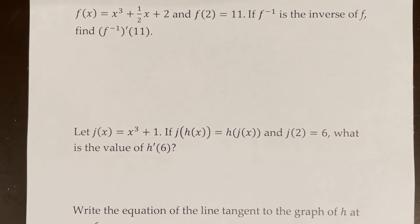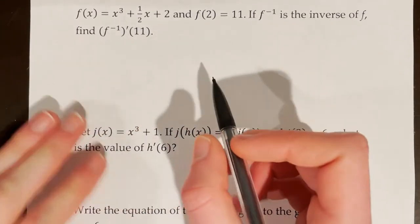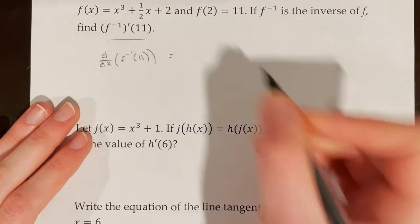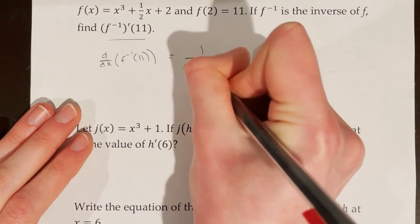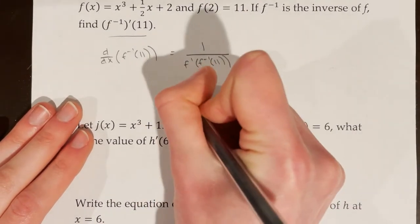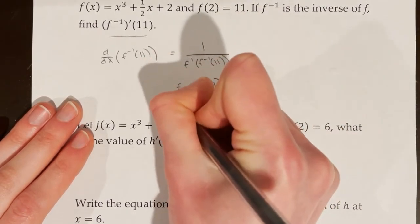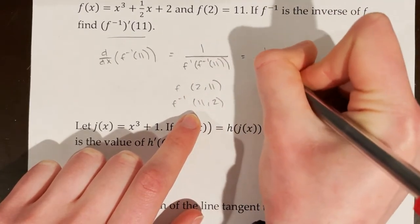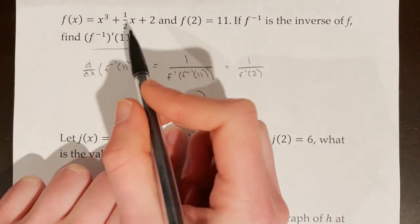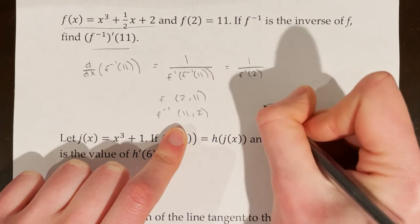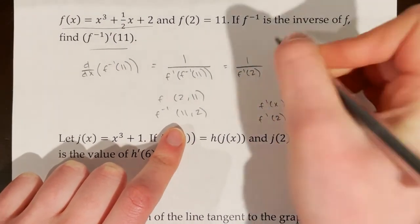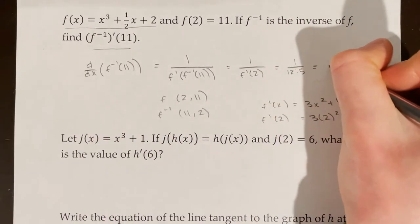f of x equals x cubed plus 1 half x plus 2, and f of 2 equals 11. If f inverse is the inverse of f, find f inverse prime of 11. Rewriting as the derivative of f inverse at 11, this equals 1 over f prime of f inverse of 11. The point (2, 11) on f means (11, 2) on f inverse, so f inverse of 11 equals 2. This gives 1 over f prime of 2. Finding the derivative: f prime of x equals 3x squared plus 1 half. Plugging in 2 gives 12.5. So the answer is 1 over 12.5, which equals 0.08.